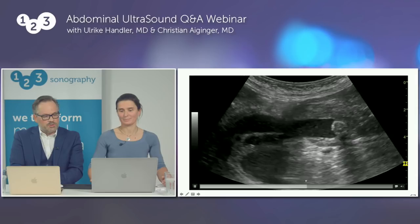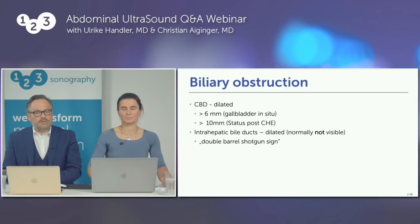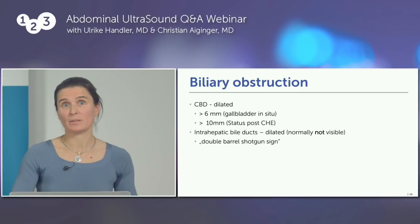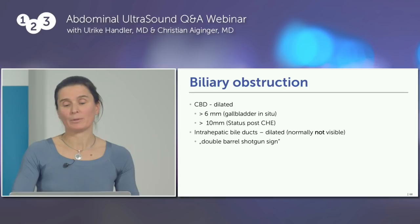A tumor can also often cause biliary obstruction. Summary of biliary obstruction: the common bile duct is dilated (>6 mm with gallbladder present, >10 mm post-cholecystectomy), intrahepatic bile ducts are dilated and visible when normally they are not, and there is the 'gnarled tree' or 'double barrel shotgun' sign — the biliary tree seen parallel to the branches of the portal vein.